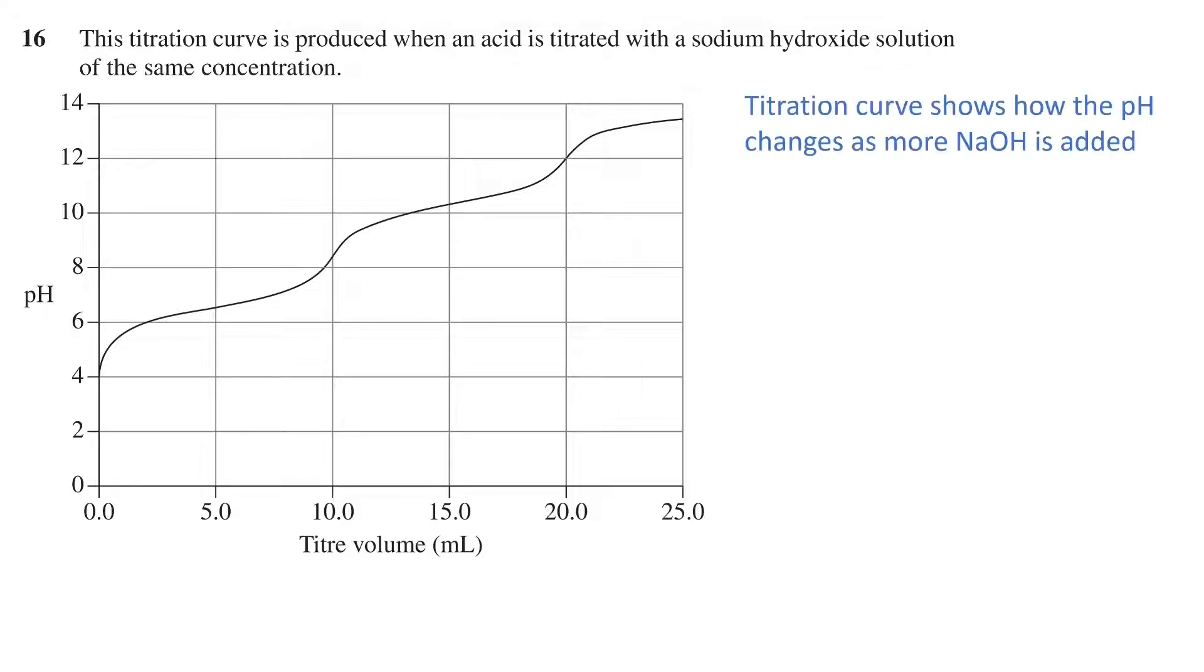Firstly, this titration curve shows how the pH changes in the conical flask that contains the acid as we add more sodium hydroxide. The equivalence point indicates when the reaction is complete.